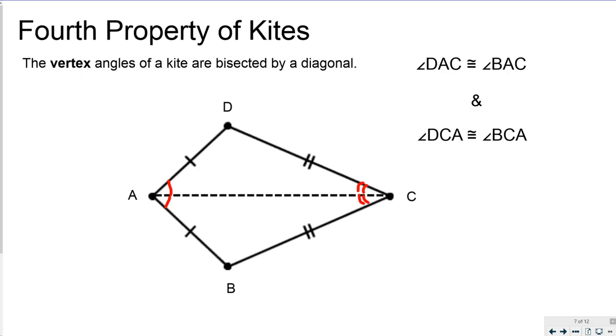Fourth property of kites: the vertex angles of a kite are bisected by a diagonal. So you can see that the long diagonal creates two separate and congruent angles within the kite. So in this diagram angle DAC is congruent to angle BAC and angle DCA is congruent to angle BCA.